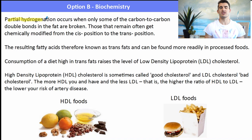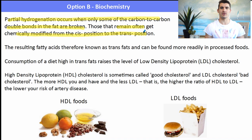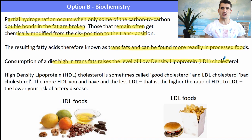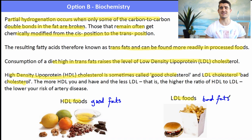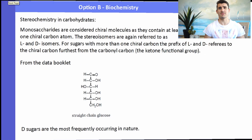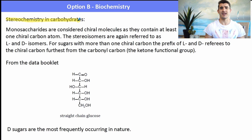When they do this in the food industry, we don't get full hydrogenation - only some of them will convert. The rest often get chemically modified from the cis position to the trans position, resulting in higher levels of trans fatty acids in processed foods. Consumption of high trans fatty acid diets raises the level of LDL - low density lipoprotein - sometimes called LDL cholesterol, which is the bad cholesterol. HDL cholesterol is associated with good fats, and LDL with bad fats. Too many bad fats in our system can lead to artery and heart diseases.